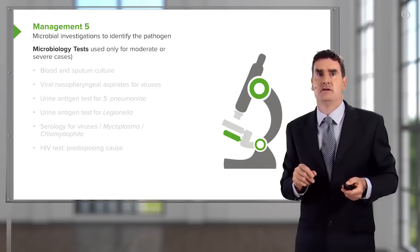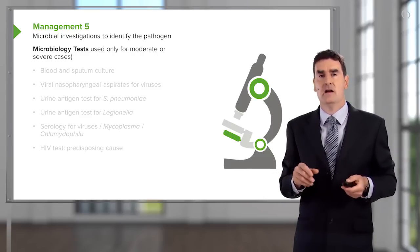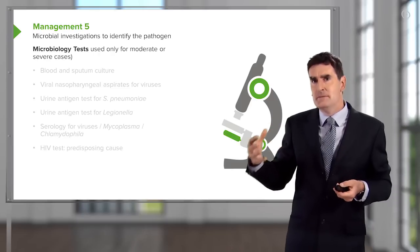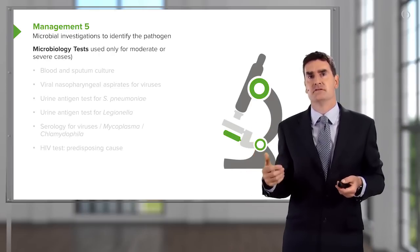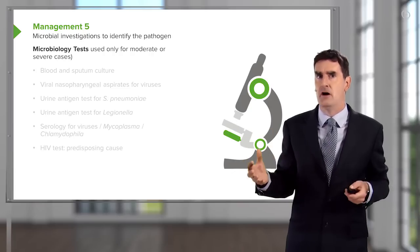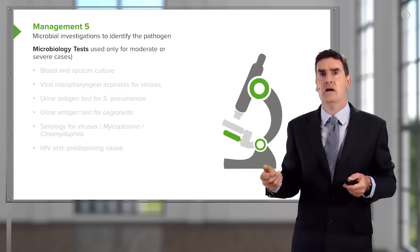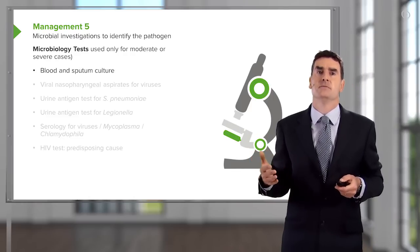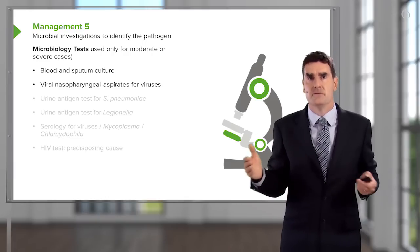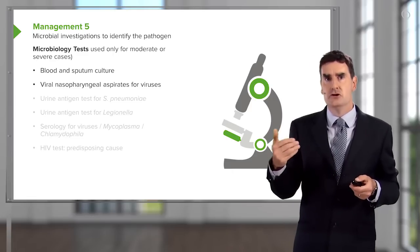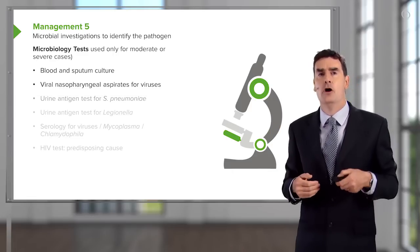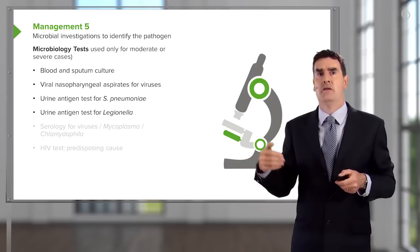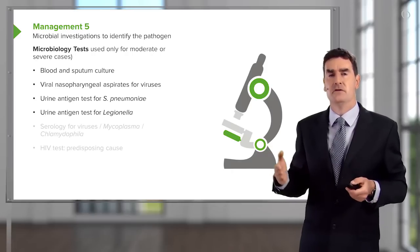We do tests to identify the pathogen causing pneumonia, but we limit these generally to patients presenting with moderate or severe disease — those in hospital with a reasonably high risk of mortality of 15% or more. In these patients we do a blood culture and, if possible, a sputum culture. We might do a viral nasopharyngeal aspirate to look for viruses such as influenza A. There are also two urine antigen tests useful in pneumonia: one for pneumococcus and one for Legionella, both with about 70% sensitivity.